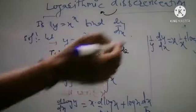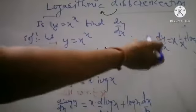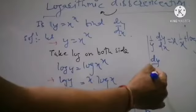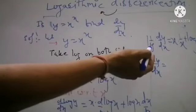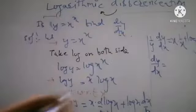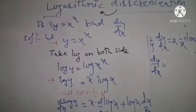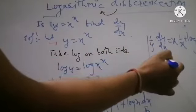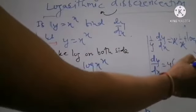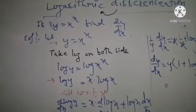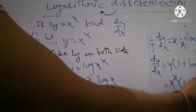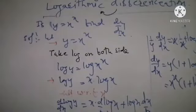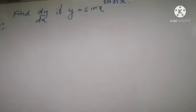The first term simplifies as x times 1/x, and x cancels, giving 1. Plus log x times the derivative of x with respect to x, which is 1. So on the left-hand side we have 1/y times dy/dx. We separate dy/dx by multiplying both sides by y. Therefore dy/dx equals y times (1 plus log x). Substituting y equals x raised to x, our final answer is dy/dx equals x raised to x times (1 plus log x).